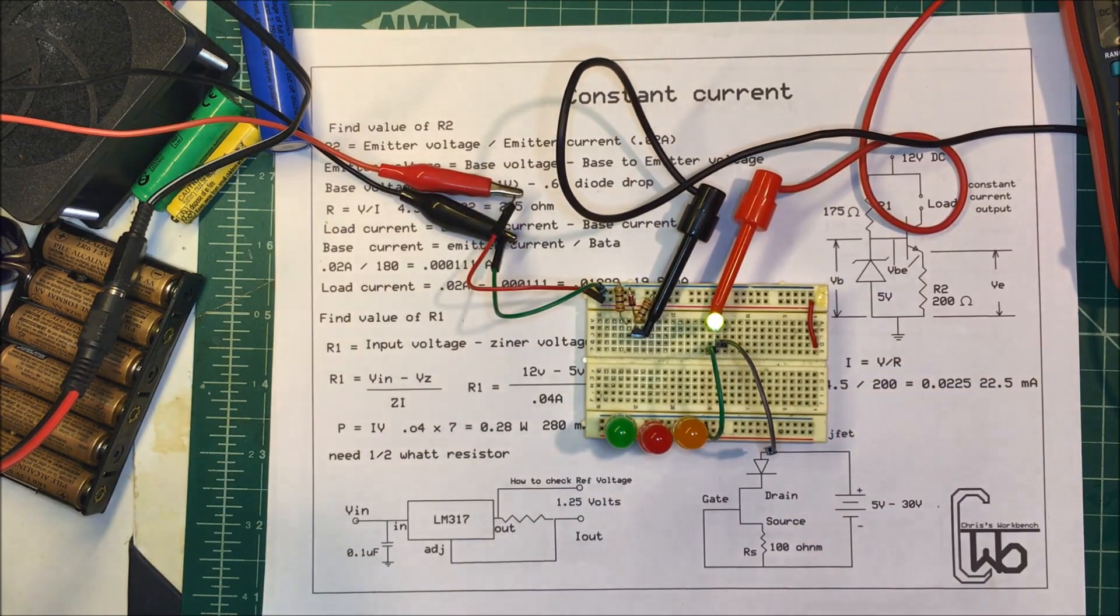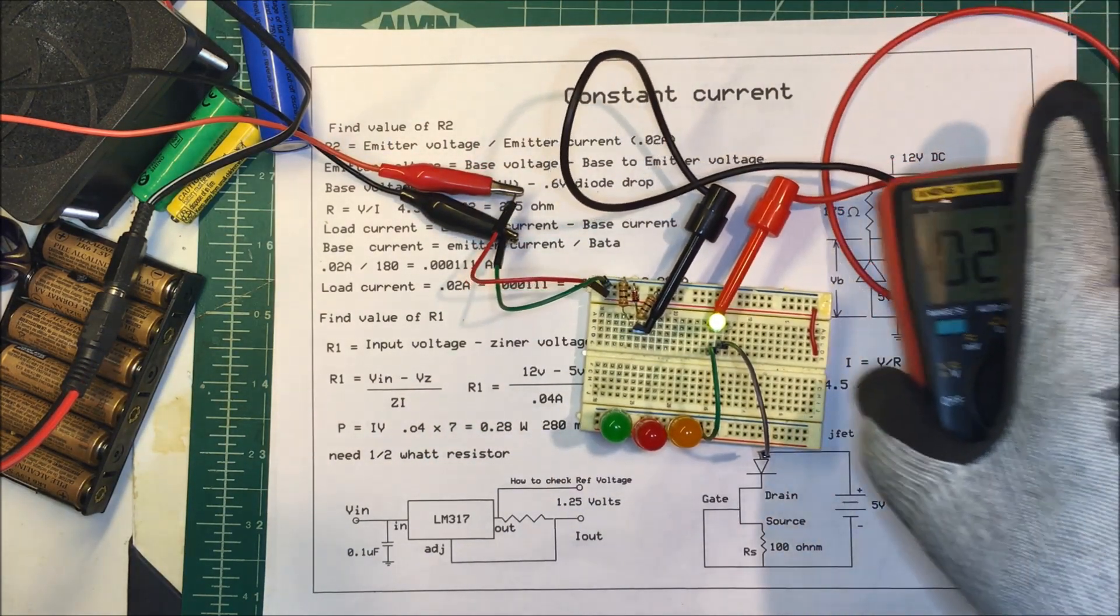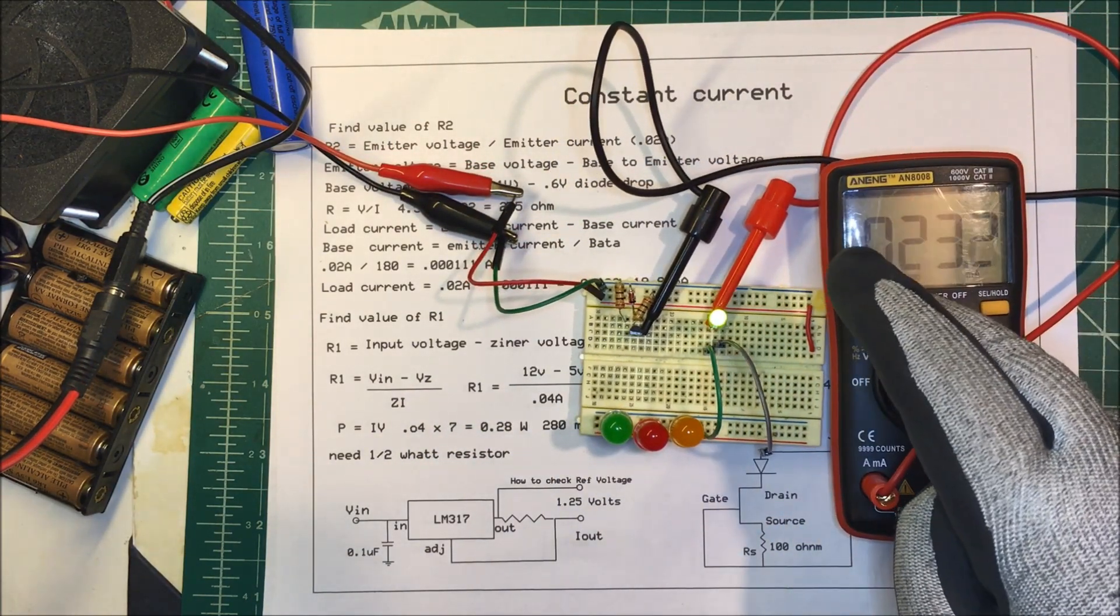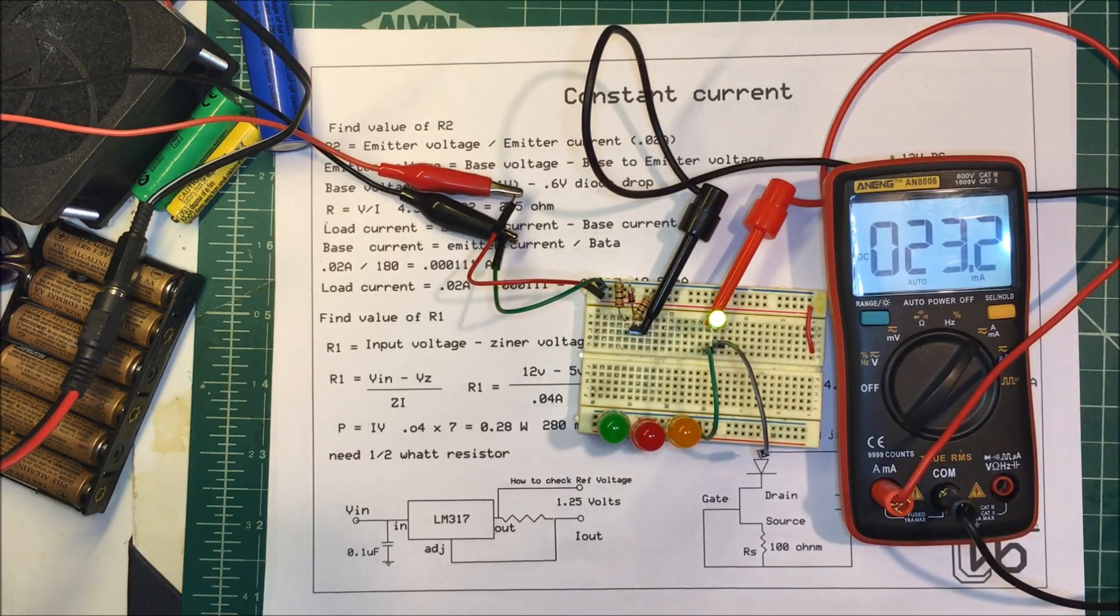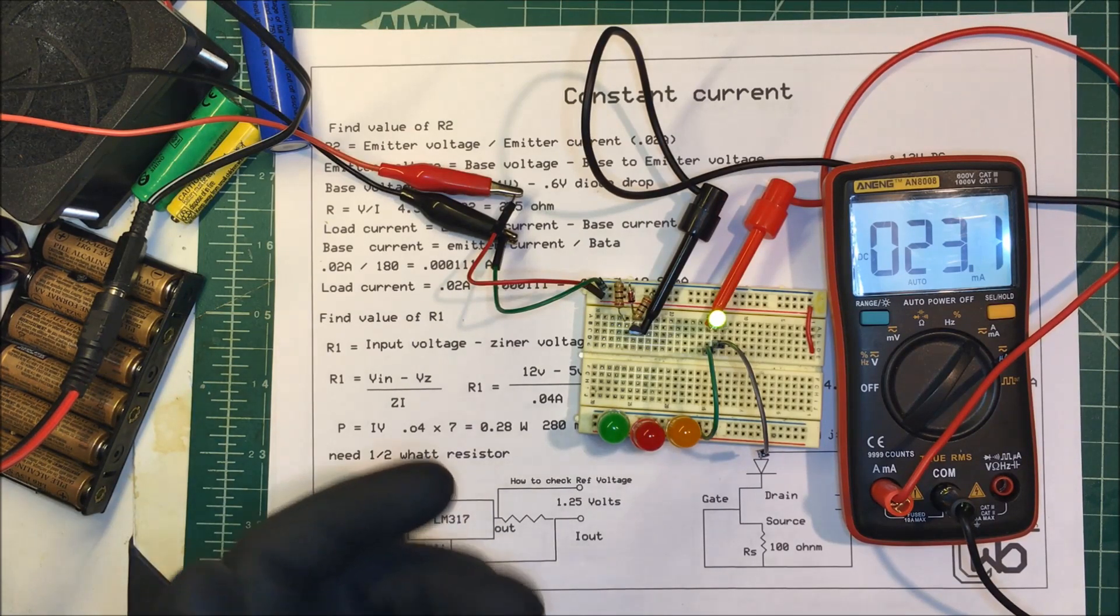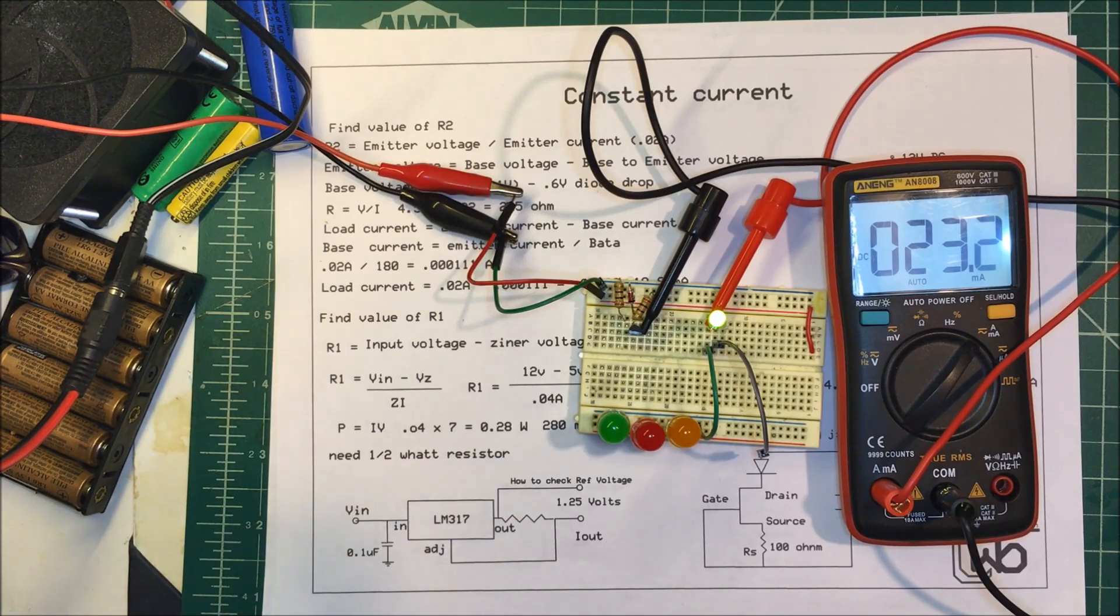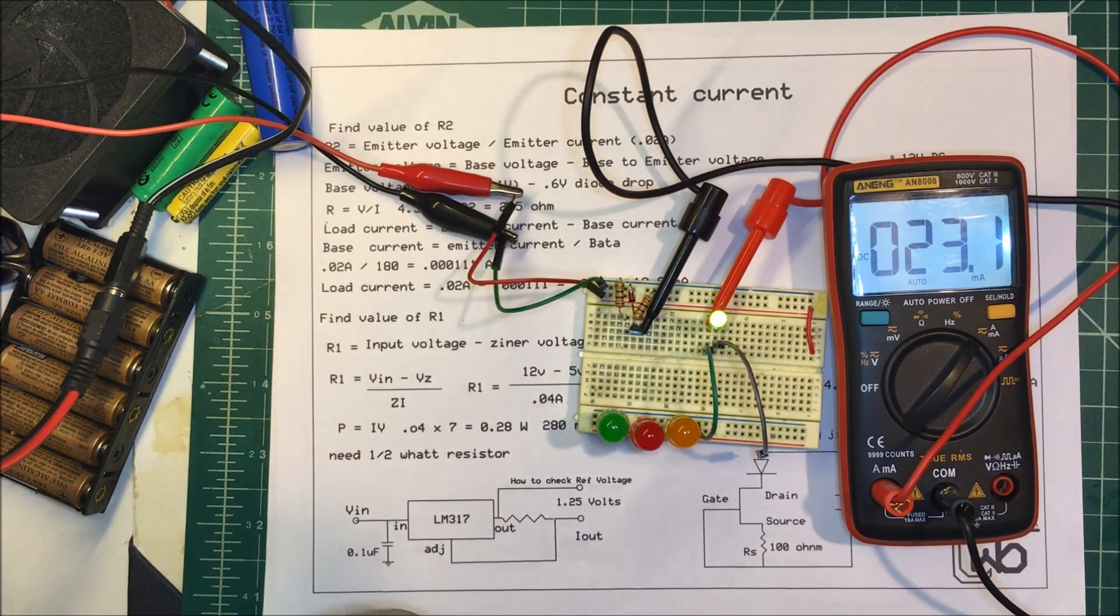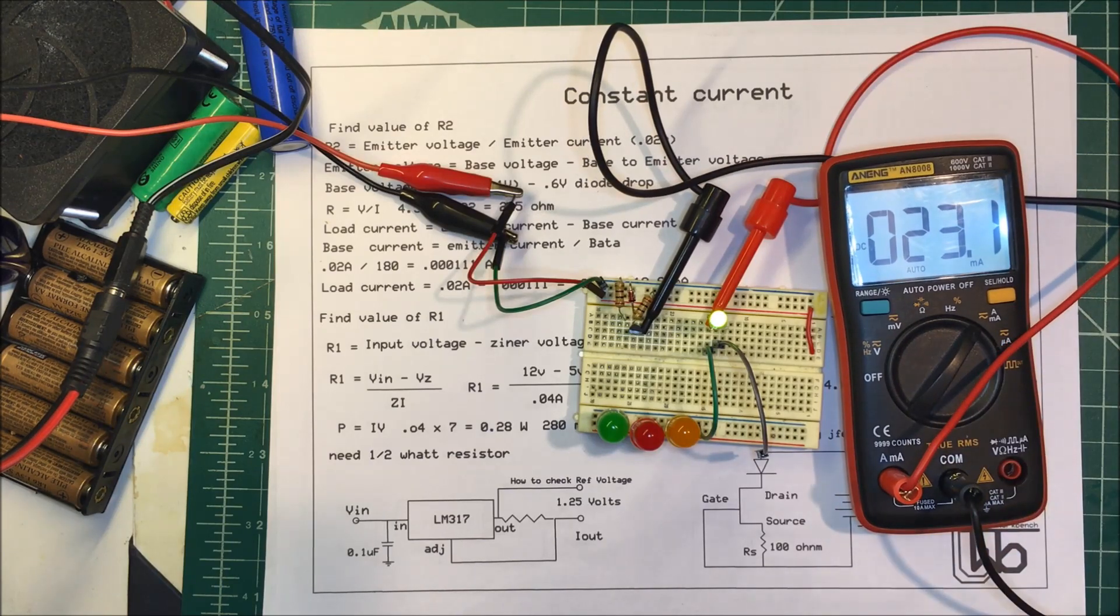I got a unit set up here. I've got 23 milliamps across there. Not bad - I don't know how accurate the meter is and these resistors might be five percent, but we've got 23 milliamps.